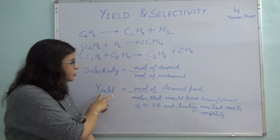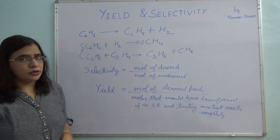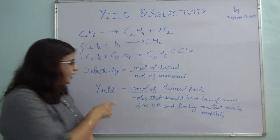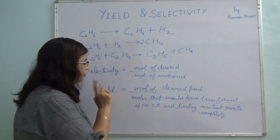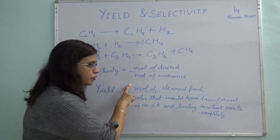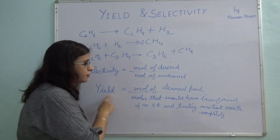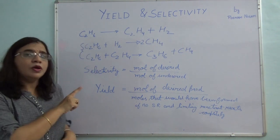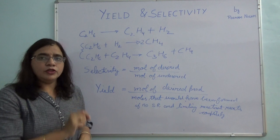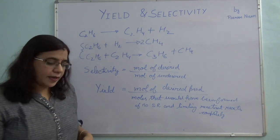Sometimes it is also given as fractional yield, in which case it will be given as a ratio of these two. Since it is a ratio, it will always come out to be a value which is less than 1.